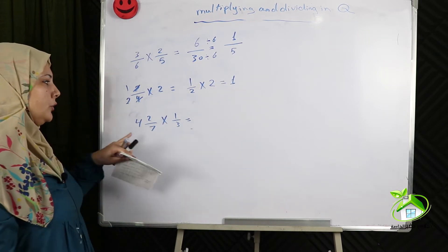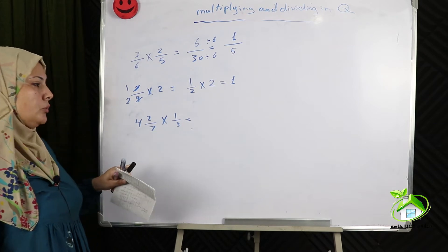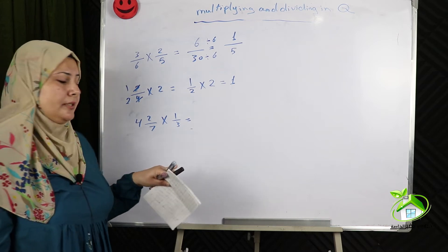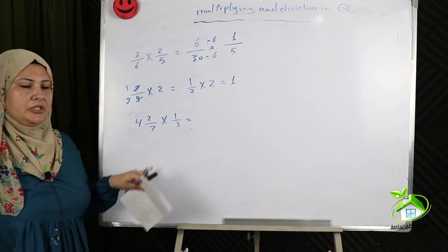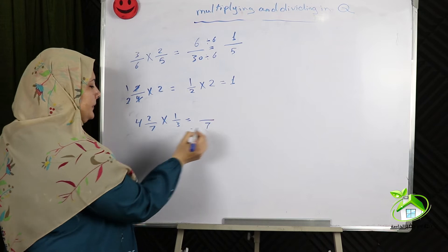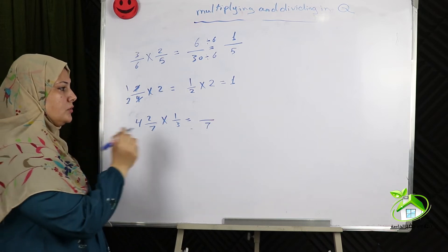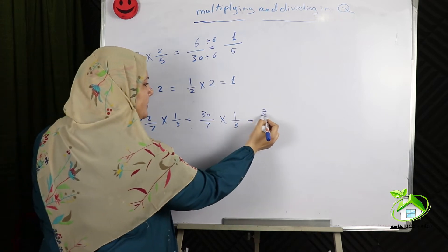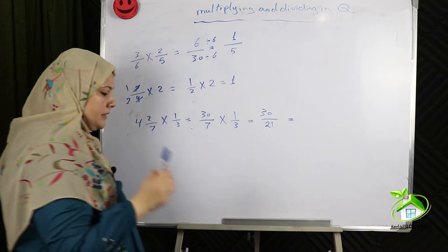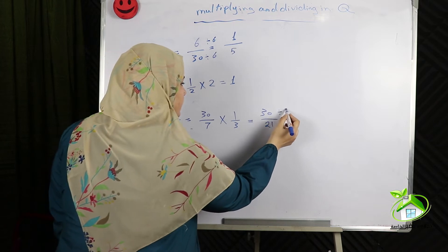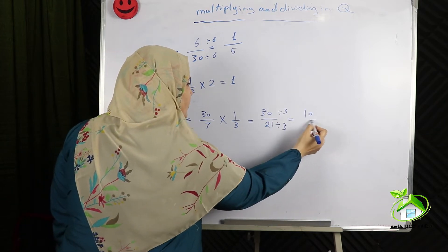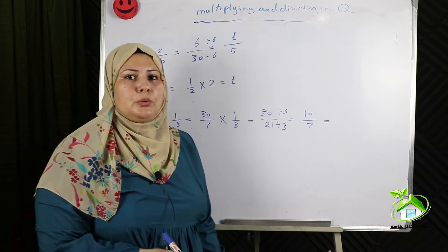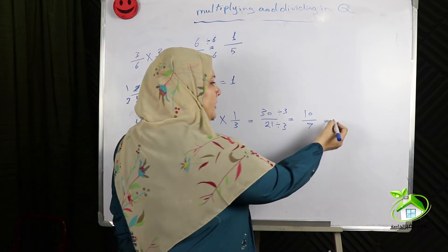Another example: 4 and 2 sevenths times 1 third. We should convert the mixed number to an improper fraction before carrying out the multiplication operation. 4 times 7 equals 28, plus 2 equals 30 — so 30 over 7 times 1 third. 30 times 1 equals 30, 7 times 3 equals 21. Simplify by dividing by 3: equals 10 over 7. Converting this improper fraction to a mixed number: 10 divided by 7 equals 1 and 3 sevenths.